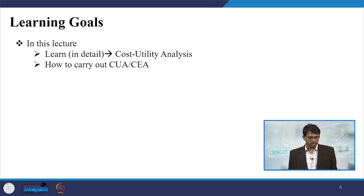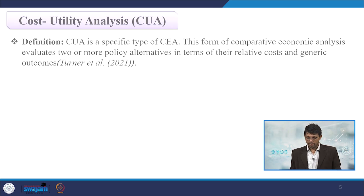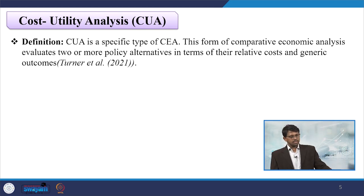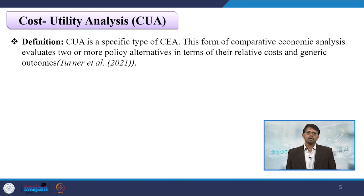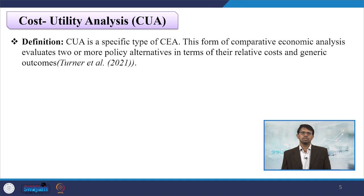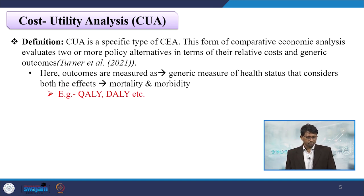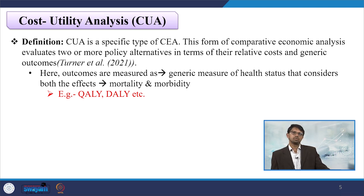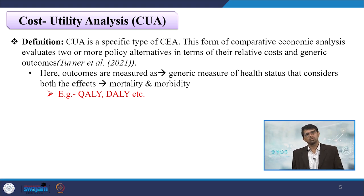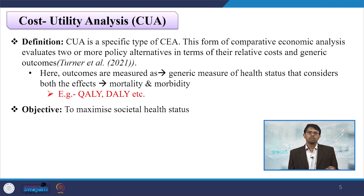That is why cost utility analysis (CUA) is required. As a definition, cost utility analysis is a specific type of CEA. This form of comparative economic analysis evaluates two or more policy alternatives in terms of their relative cost and generic outcome values, as mentioned in Turner et al. The outcomes are measured as generic measures of health status, considering both effects such as mortality and morbidity — not just by their number but through certain index values. It is measured as quality-adjusted life years (QALYs) and disability-adjusted life years (DALYs). The objective is to maximize societal health status.